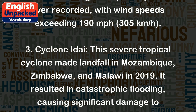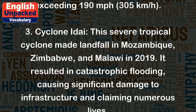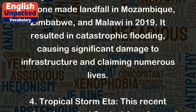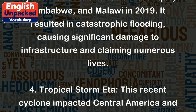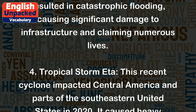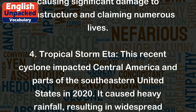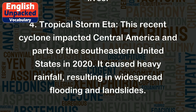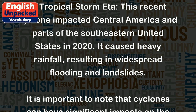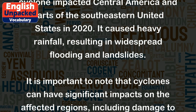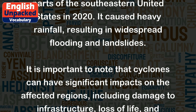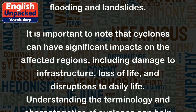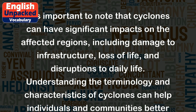3. Cyclone Edy: This severe tropical cyclone made landfall in Mozambique, Zimbabwe, and Malawi in 2019. It resulted in catastrophic flooding, causing significant damage to infrastructure and claiming numerous lives. 4. Tropical Storm Edy: This cyclone impacted Central America and parts of the southeastern United States in 2020, causing heavy rainfall, resulting in widespread flooding and landslides.